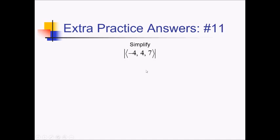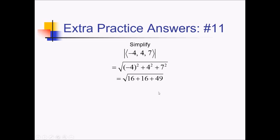On this problem, to find the magnitude of this vector, we essentially just have to use the Pythagorean theorem but with 3 coordinates instead of 2. So we'll have the square root of (negative 4) squared plus 4 squared plus 7 squared. That's the square root of 16 plus 16 plus 49. So 32 plus 49 is 81, and the square root of 81 is 9.